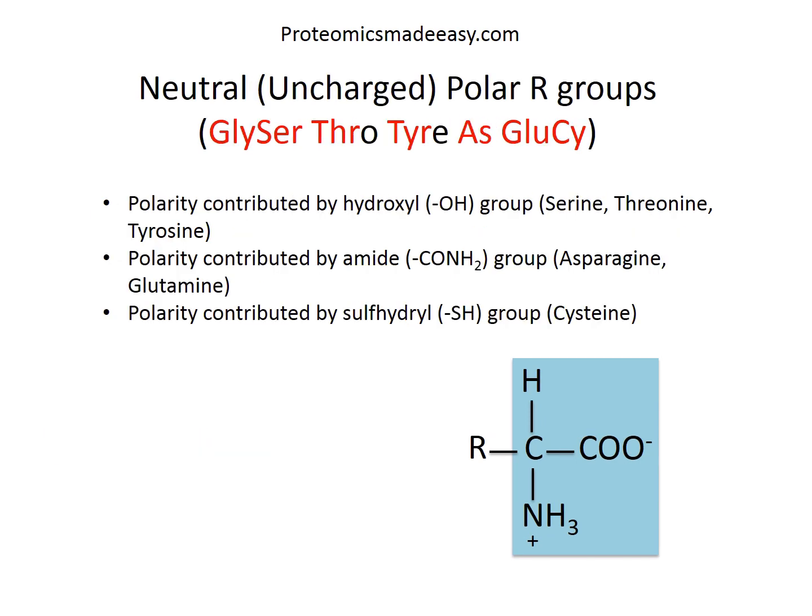Another class is amino acids with neutral or uncharged polar R groups. As a group, these amino acids are more soluble in water than those with non-polar R groups. Their R groups contain neutral or uncharged polar functional groups which can hydrogen bond with water. This is the main characteristic of amino acids with polar R groups.